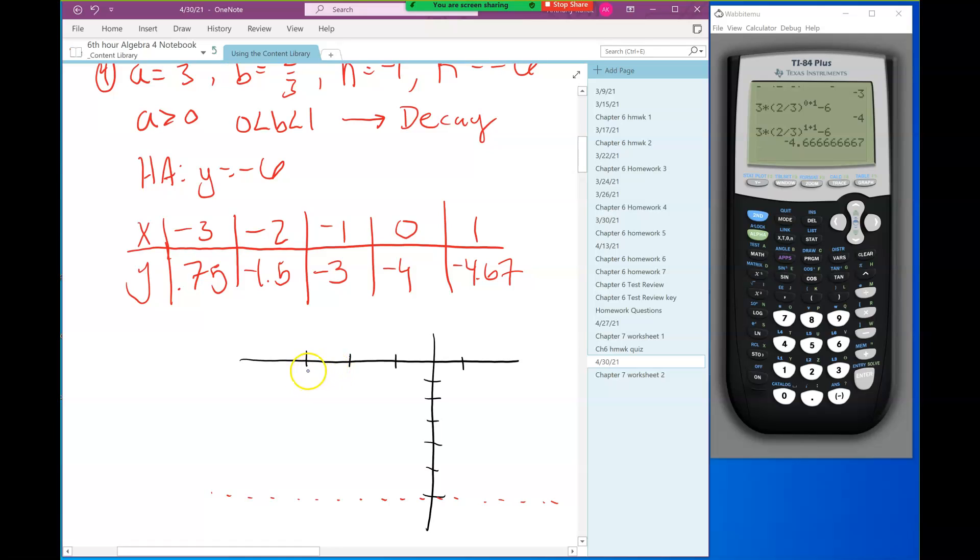There's my xy table, so now I'll draw my graph. I'll draw my asymptote at negative 6 and plot our points. So negative 3 and 0.75, negative 2 and 1.5, negative 1 and negative 3, 0 and negative 4, 1 and negative 4.67.